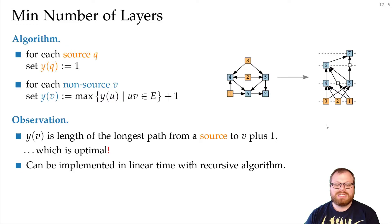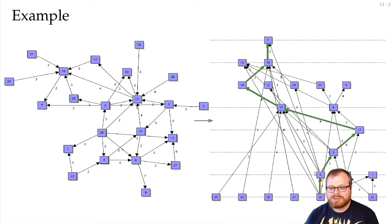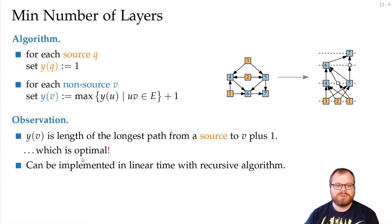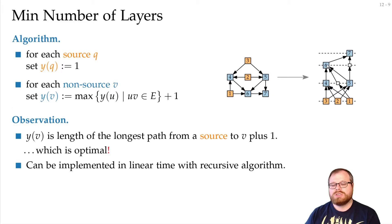We can implement this in linear time with a recursive algorithm. In this example graph, there is a path where all edges must be drawn upwards, so there is no way to reduce the number of layers — giving us an optimal algorithm in linear time. The recursive implementation is simple: start from any sink, look at the y-coordinates of all incoming neighbors, recursively compute them if needed, and repeat until all y-coordinates are determined.